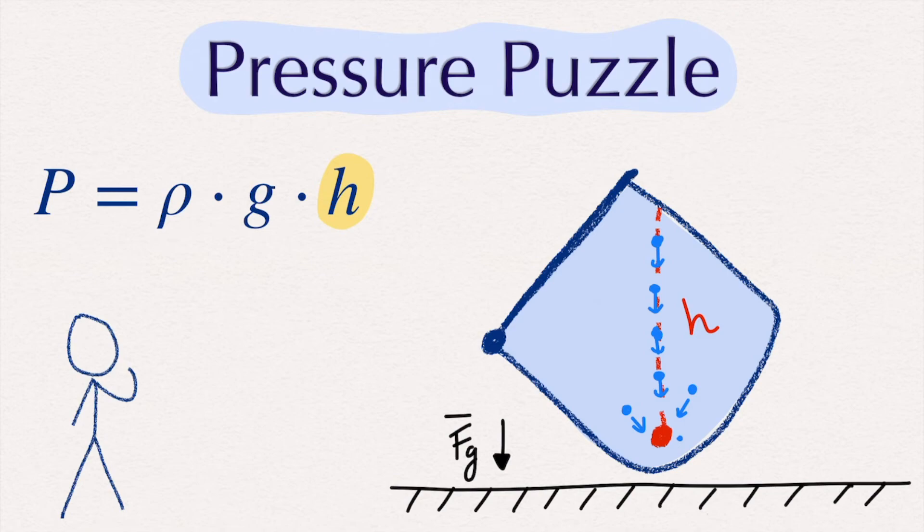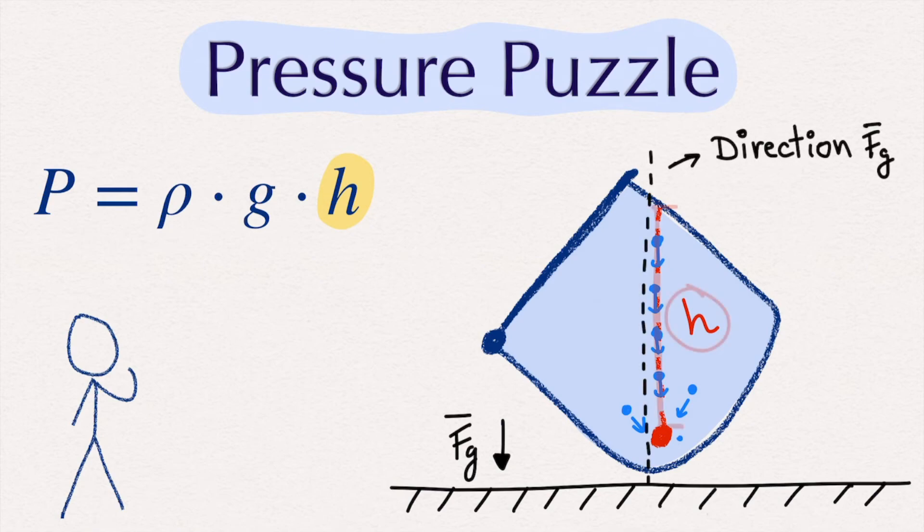And that is why the distance h in this formula measures the distance inside the fluid directly above the measuring point. Thus, the h in the pressure formula can be redefined as being the distance from the measuring position to the point furthest away inside the fluid in the direction of the gravitational field. And this solves our problem, but it immediately raises other questions.